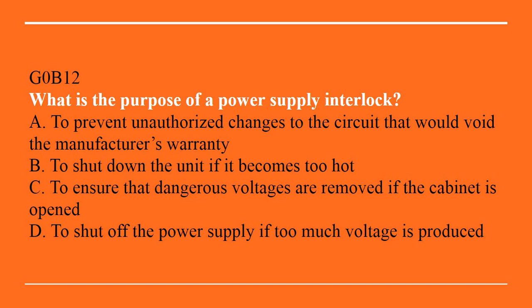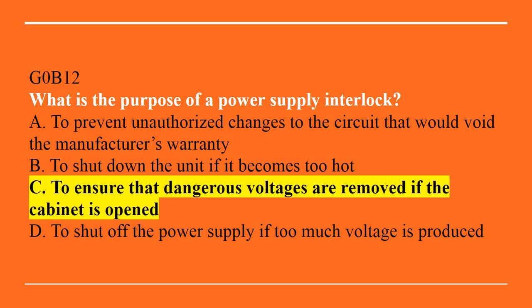G0B12: What is the purpose of a power supply interlock? A, to prevent unauthorized changes to the circuit that would void the manufacturer's warranty. B, to shut down the unit if it becomes too hot. C, to ensure that dangerous voltages are removed if the cabinet is opened. Or D, to shut off the power supply if too much voltage is produced. Best answer is C — to ensure that dangerous voltages are removed if the cabinet is opened.